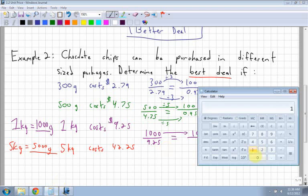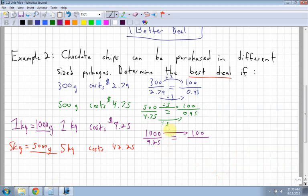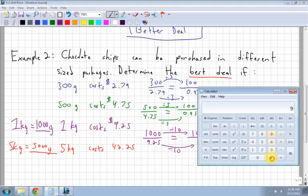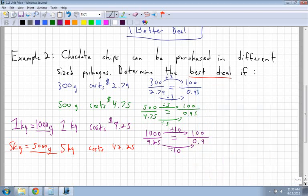1,000 divided by 100. Oh right, 10. So dividing by 10, and the bottom also gets divided by 10. So I have $9.25 divided by 10 is 0.925. So 0.925. Notice that it's very close to the first one, but still, this one is a bit cheaper.